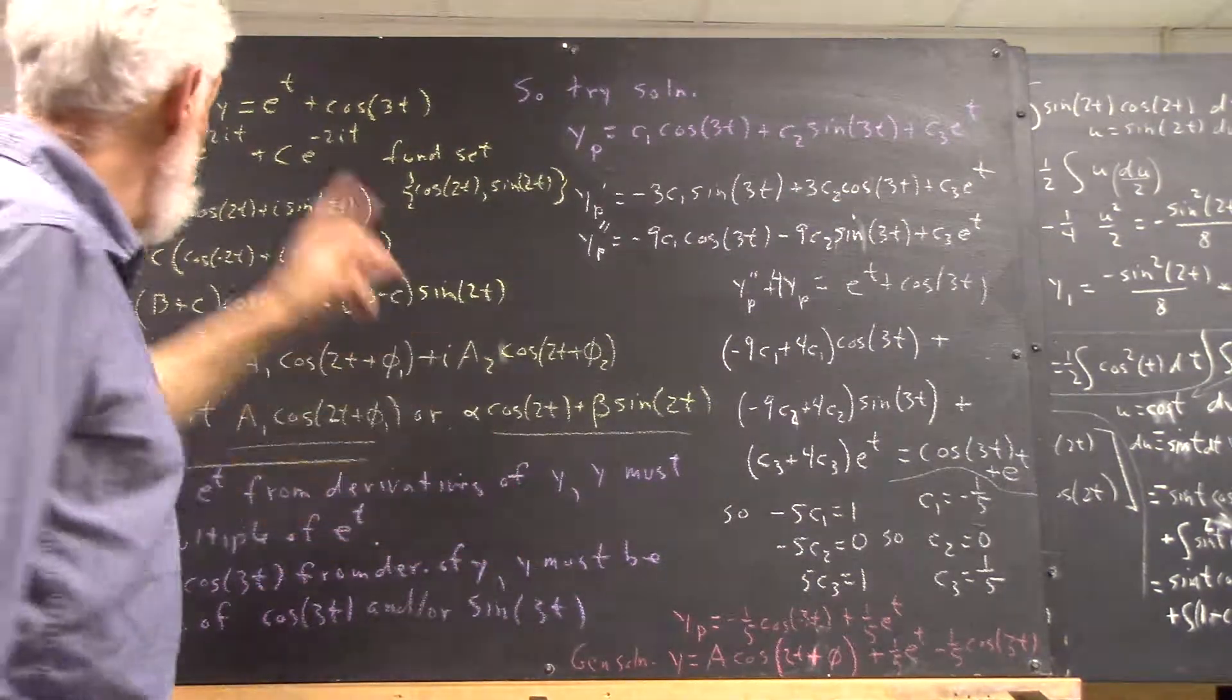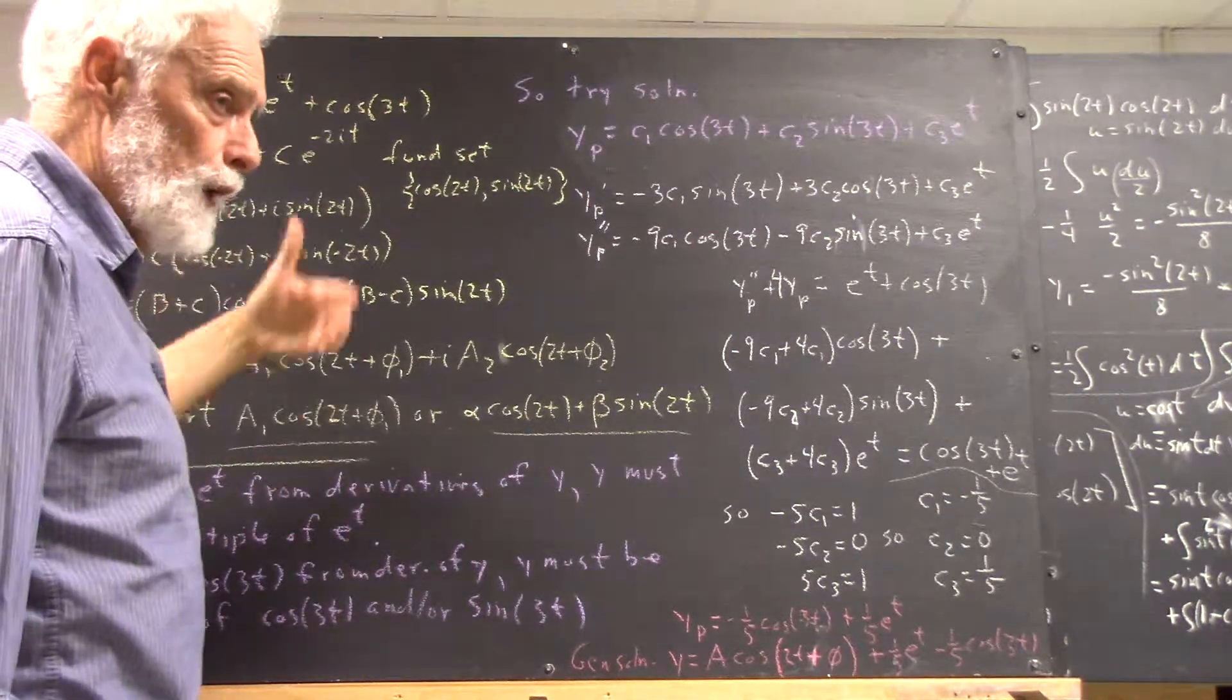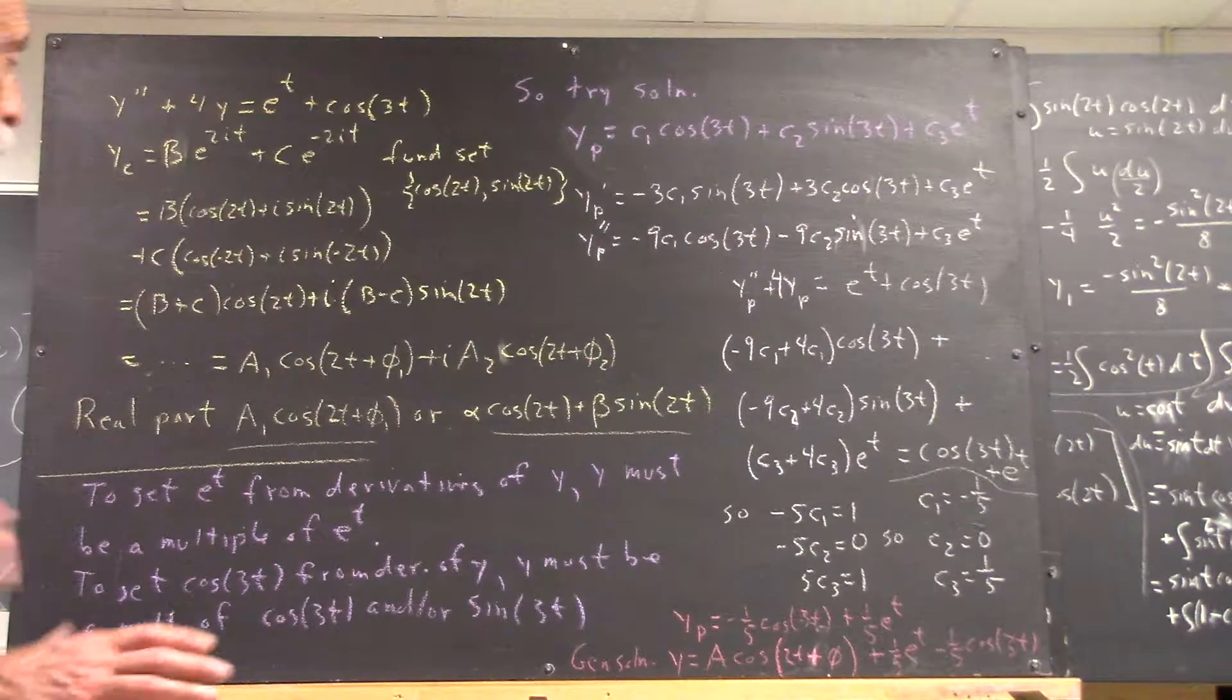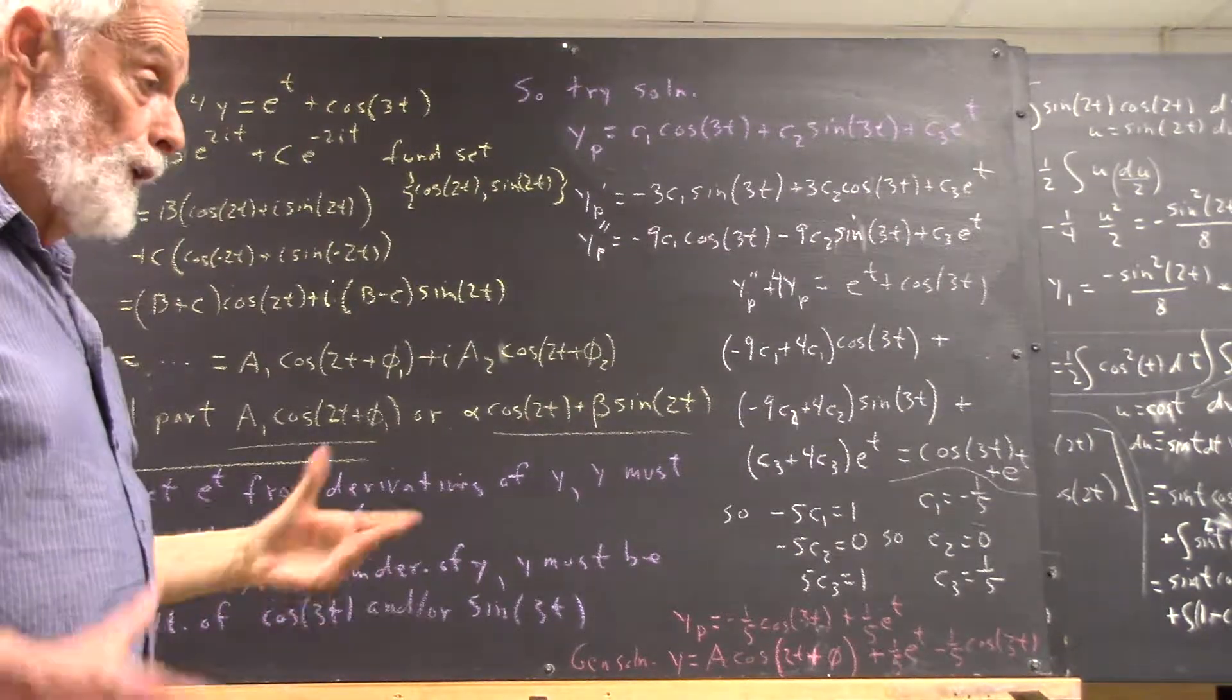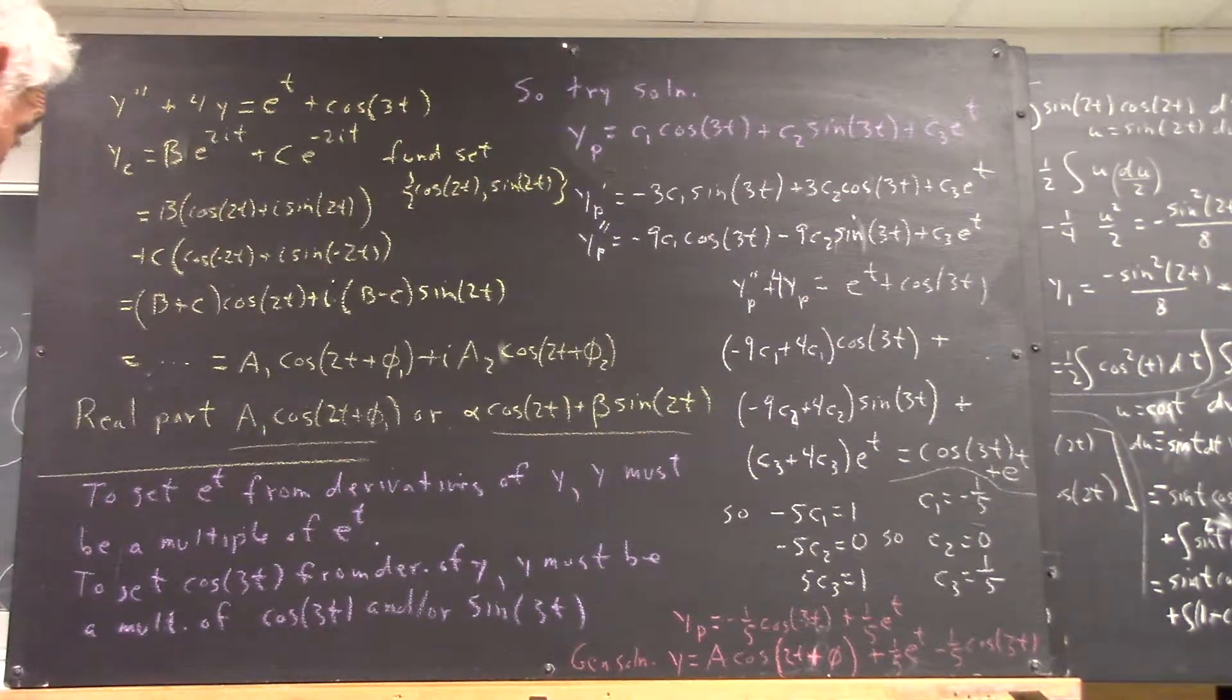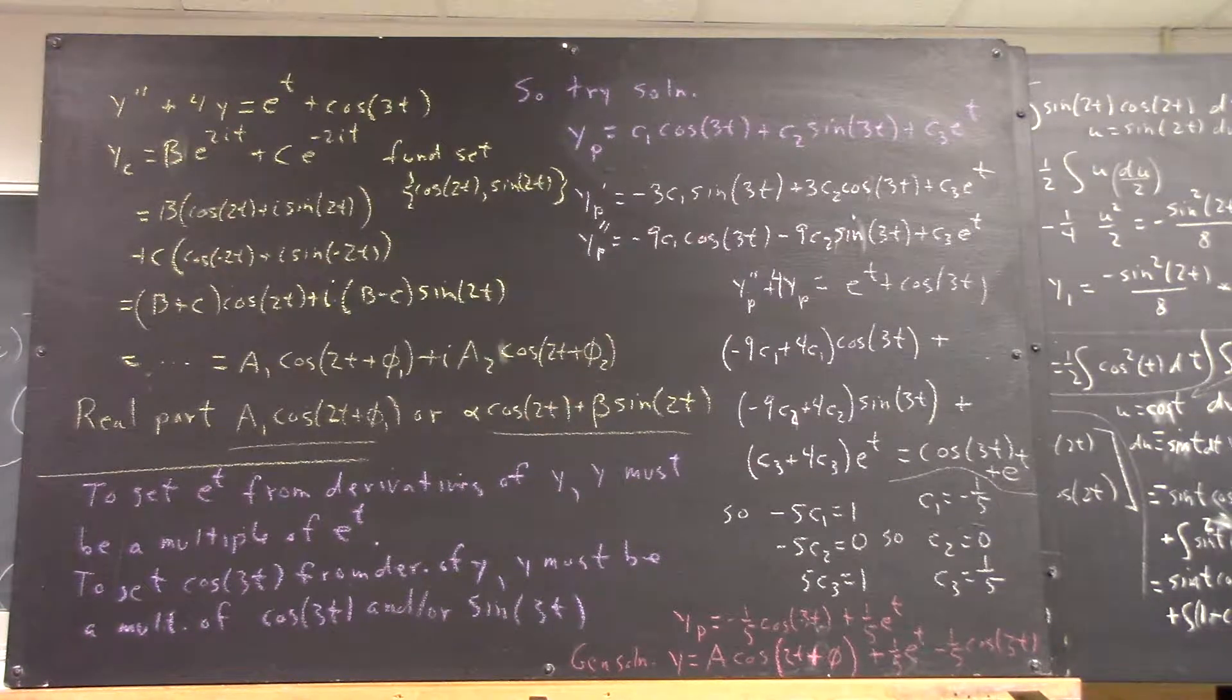In order to get e to the t from derivatives of y, which is from y and its derivatives, which is what we have here, y has got to be a multiple of e to the t. There's nothing else you can take a derivative of to get a multiple of e to the t.